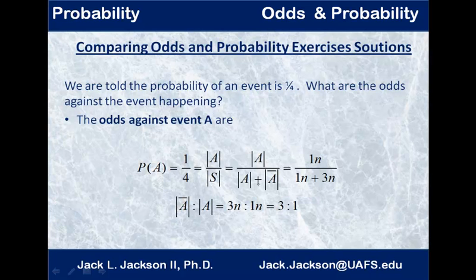Okay, if there are 4n things altogether, and 1n is the size of A, there must be 3n for the size of the complement. Okay, or 1 over 1 plus 3. So, to find the size of the complement, we can just subtract this, 4 minus 1, to get the 3. So, we do 3 to 1.